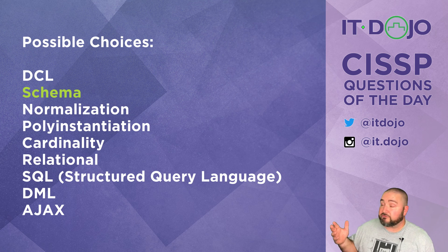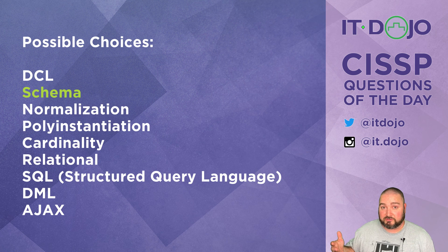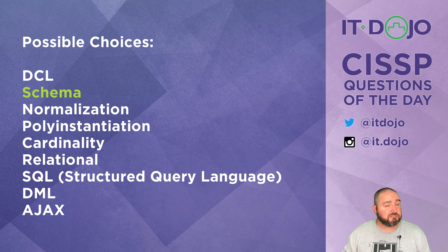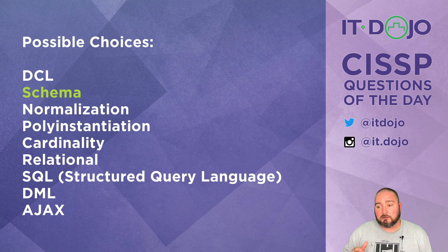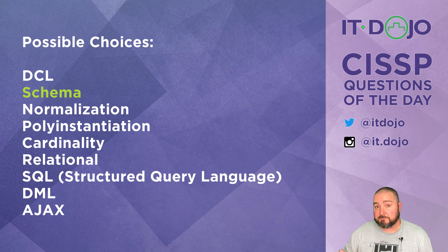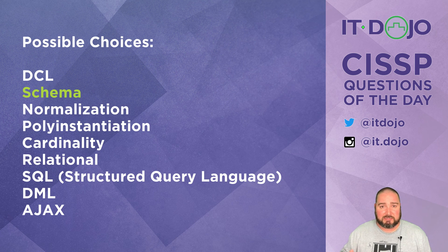Even though we got the right answer, let's keep going and talk about why the other answers are wrong. Normalization is the process of optimizing all the different tables and columns in your database to make sure they're as efficient as possible, eliminating redundant data. It's an interesting topic, but for a different day.